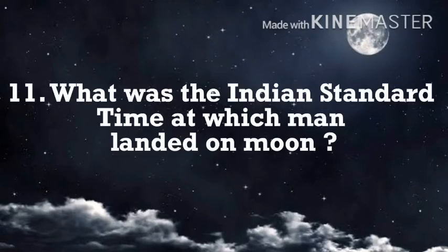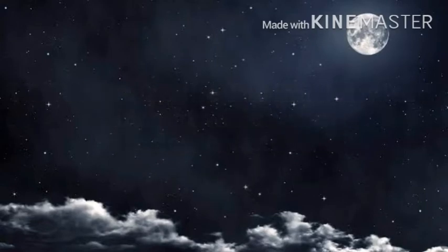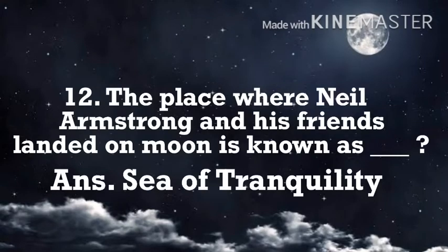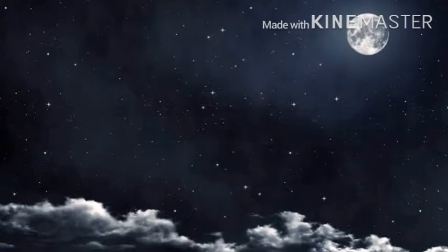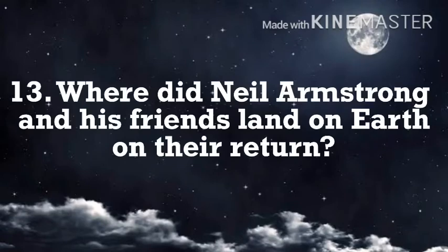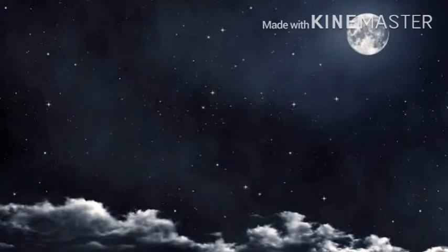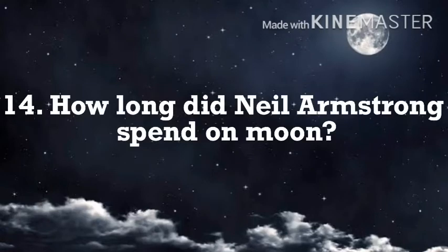What was the Indian Standard Time at which man landed on the moon? 1:48 a.m. The place where Neil Armstrong and his friends landed on the moon is known as the Sea of Tranquility. Where did Neil Armstrong and his friends land on Earth on their return? The Pacific Ocean.